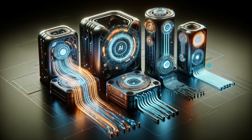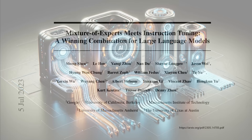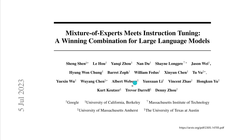That was 2022. What about advancements in 2023? We have a mixture of expert system with instruction tuning. This comes from Google, UC Berkeley, MIT, Amherst, and the University of Texas, published July 2023 — instruction tuning of mixture of expert systems. Now we are in the fine-tuning domain, and instruction tuning is a very special form of fine-tuning.